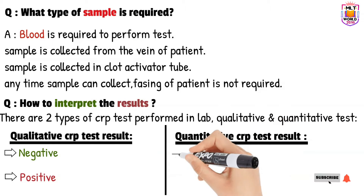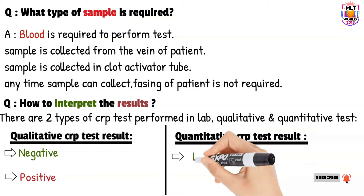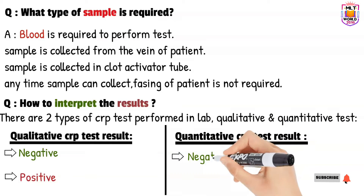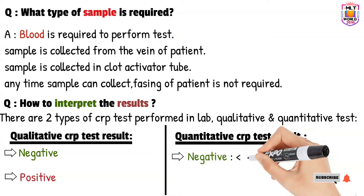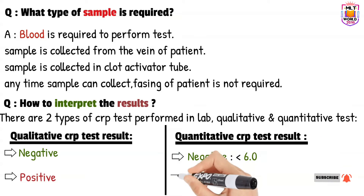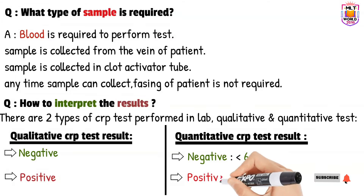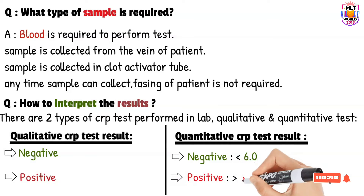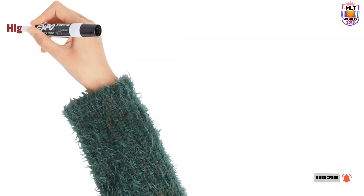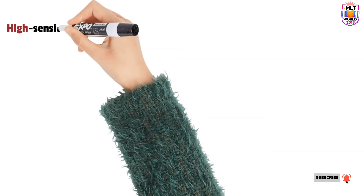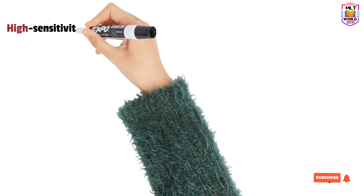For the quantitative CRP test: if negative, the value will be less than 6.0, though this depends on the kit and machine used. If positive, it will be more than 6.0 — and the more severe the inflammation, the higher the CRP level, sometimes reaching values of 10, 100, or more. It depends on the type of infection and inflammation.